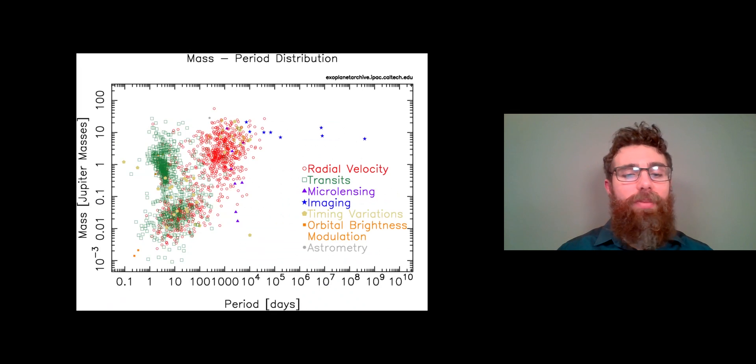When we do that, we've got orbital period against the mass of the planet in Jupiter masses, and you've got quite a range there. Note that a lot of your planets are green, which is the transit method again, and they're also to the left and upper part of the plot, which basically means large planets close to their stars are easy to find for obvious reasons.